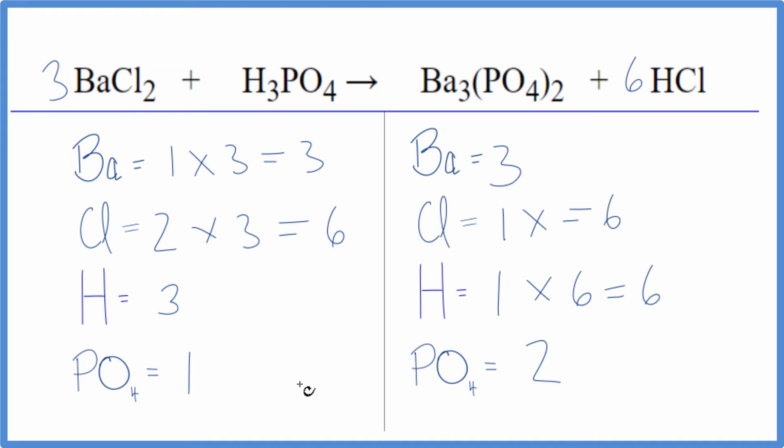Let's balance the hydrogen - that might even fix these phosphates. If we put a 2 as our coefficient, three times two gives us six hydrogens. Those are balanced. The 2 goes to everything, so we have one phosphate times two, and that balances the phosphates.